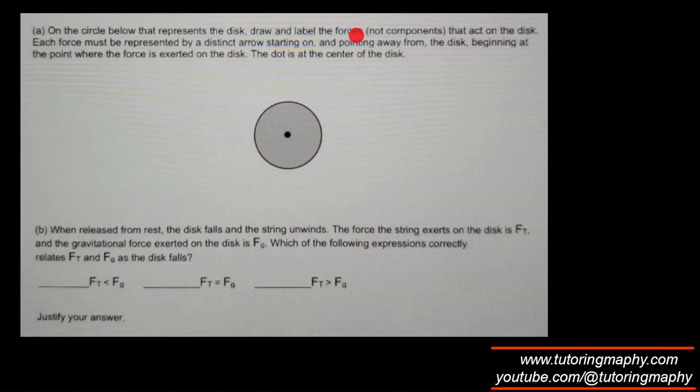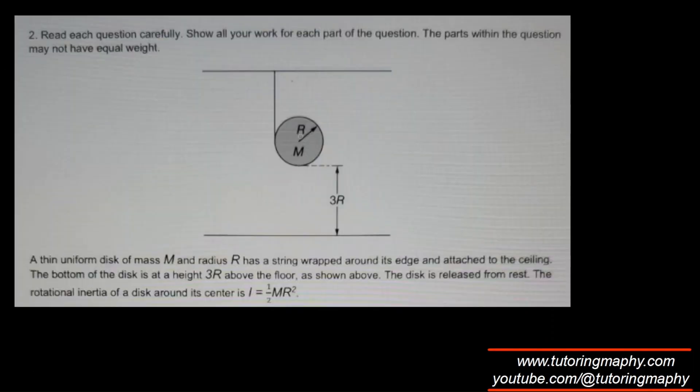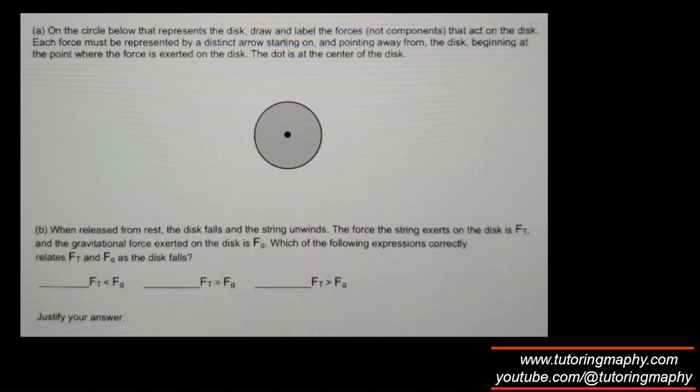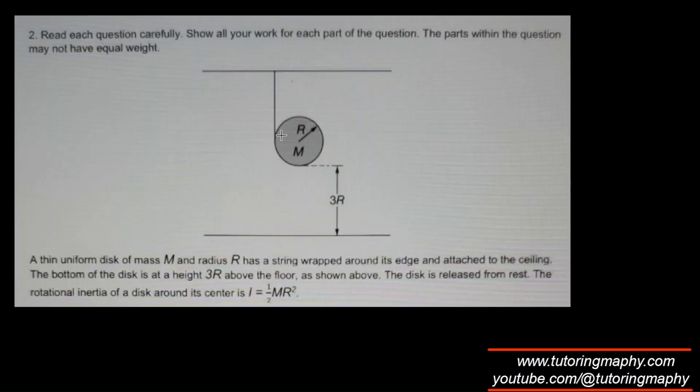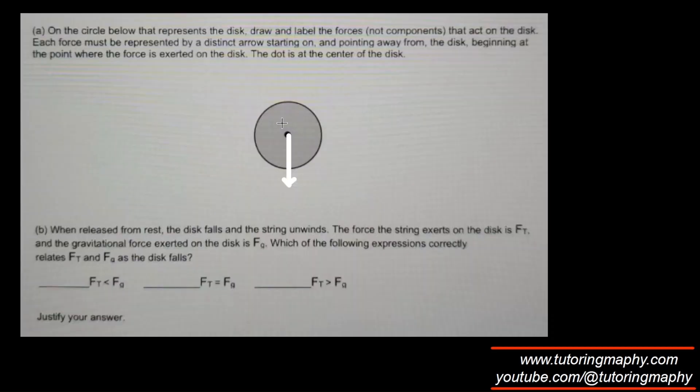So on the circle we have to draw the forces. Basically we need to draw FBD. It's pretty straightforward. We know that there is gravity acting on this guy, pointing downwards at the center. And at this point we have a tension pointing upwards.